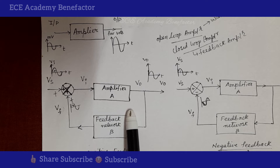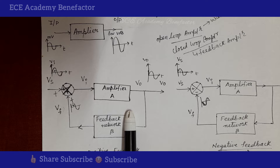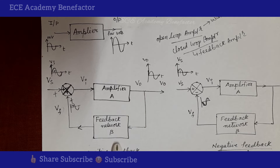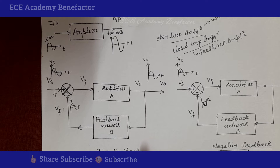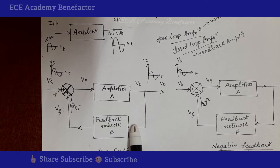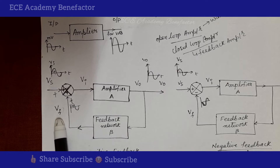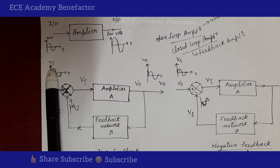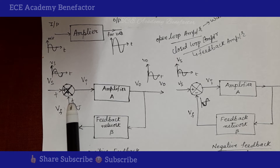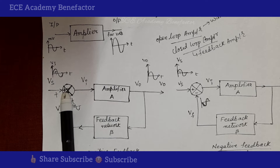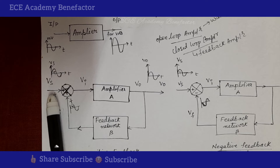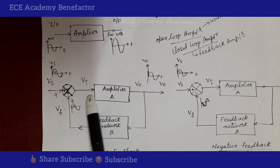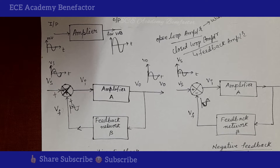There are two types of feedback: positive feedback and negative feedback. In positive feedback, the feedback voltage and the signal voltage are both in phase — when the positive cycle of the input signal and the positive cycle of the feedback signal appear at the same time. When the source signal and feedback signal are in phase, we call it positive feedback. Positive feedback is found in oscillators because it generates oscillation.